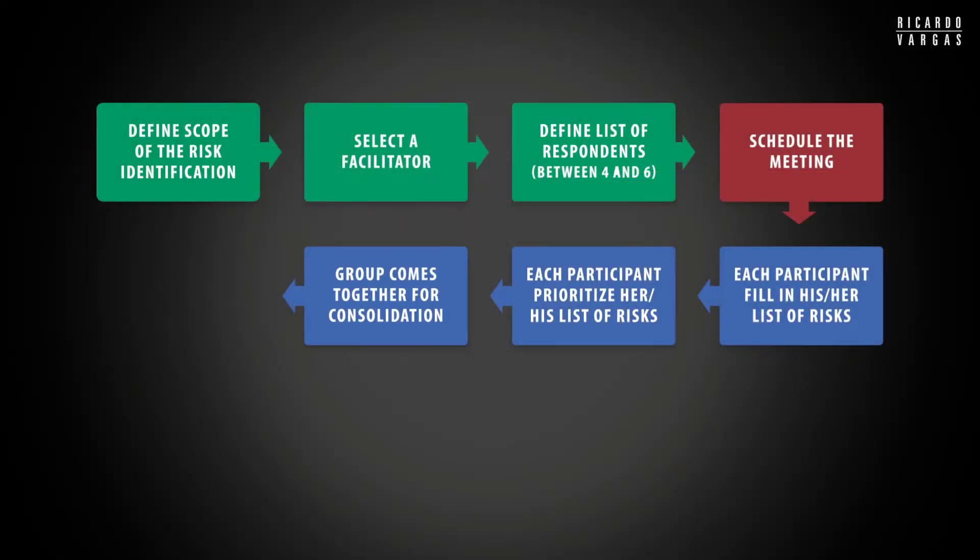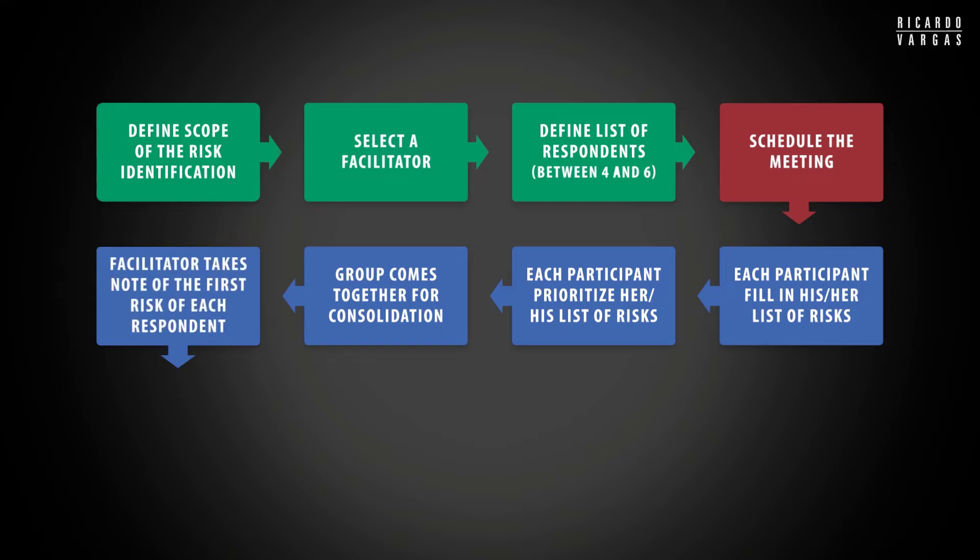If there is a tie, no problem. You put one, one, and then you put three, four, five. And then what happens? The group comes together. And then the facilitator asks, can you please tell me your risk number one, your first priority risk? And then person A says risk A. People start saying their risks.